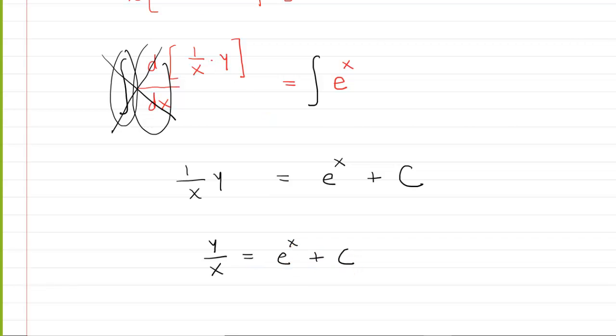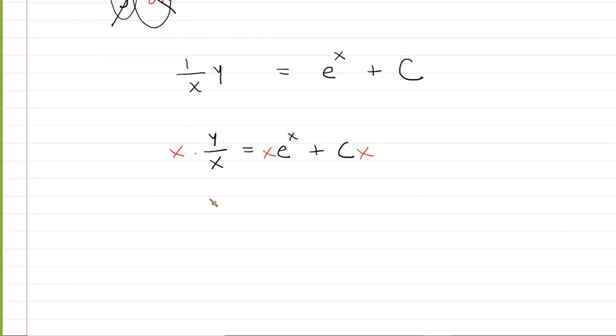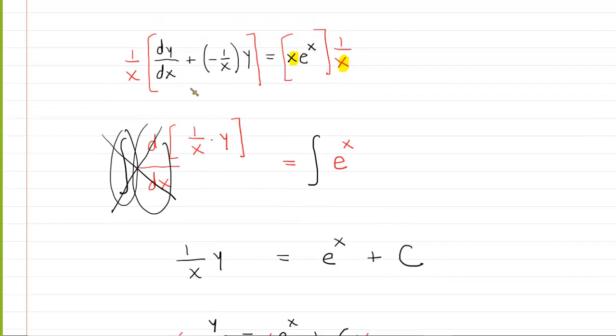We can solve this for y. We can multiply each term by x. On the left side, the x's will cancel. So we have y equals x e to the x plus constant times x. Because the question gave us an initial condition, we can actually solve for the constant.